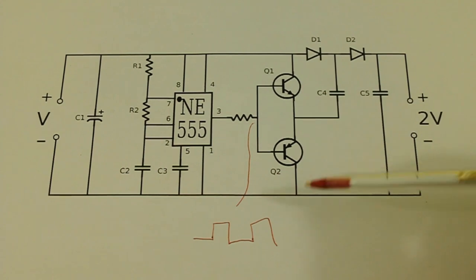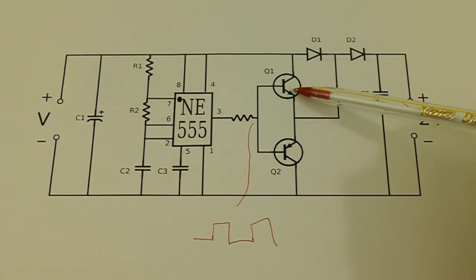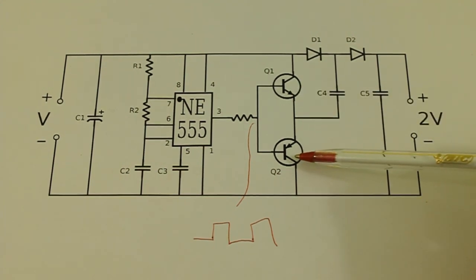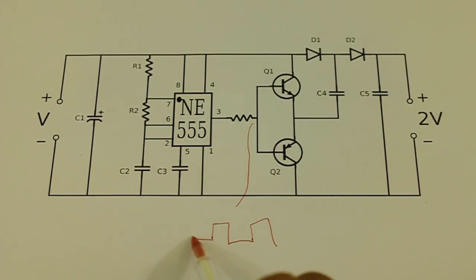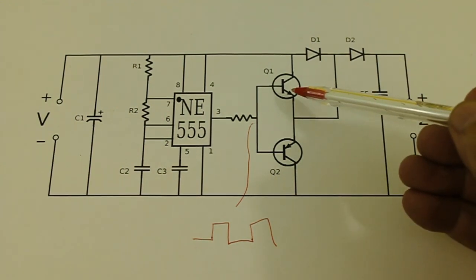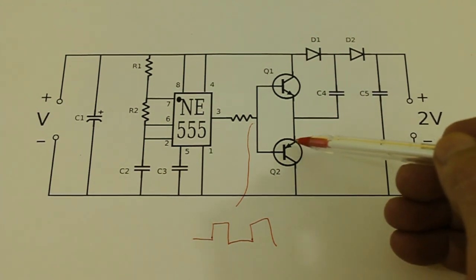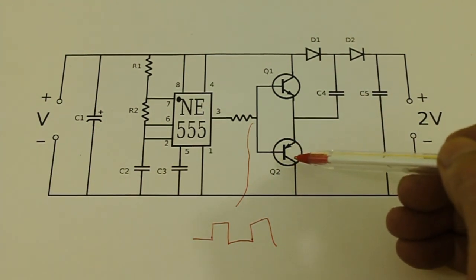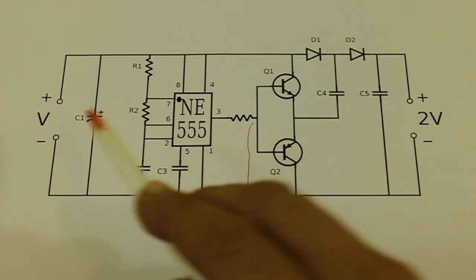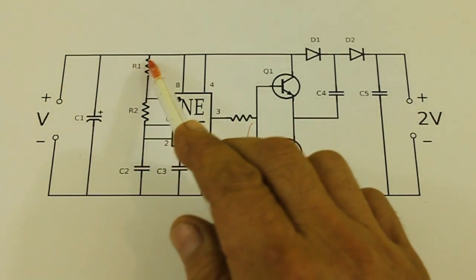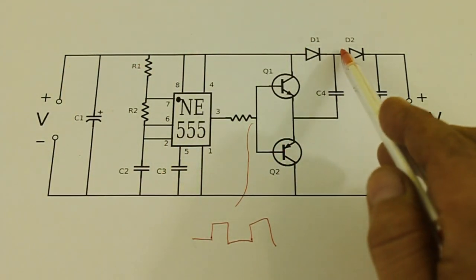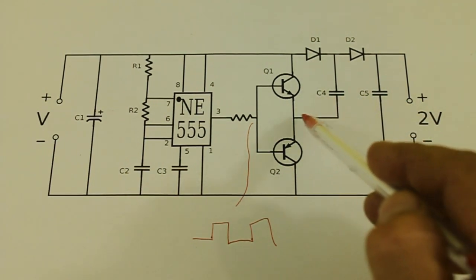Okay so here we have an NPN transistor and this is a PNP. When the pulse is at its low here, the NPN transistor does not conduct but the PNP transistor conducts the electricity. So the current from the source comes here and charges the first capacitor.